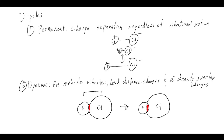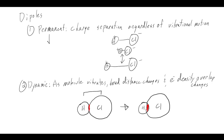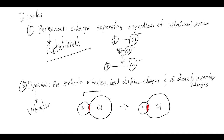What we'll show with a lot of math today is that the permanent dipole determines rotational transitions - selection rules for rotational spectroscopy are due to the permanent dipole - whereas the dynamic dipole is what's important for vibrational transitions and vibrational selection rules.